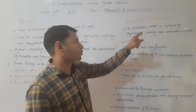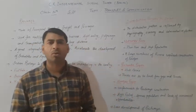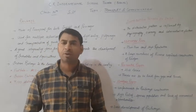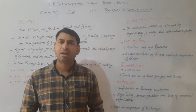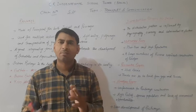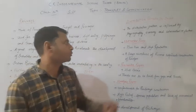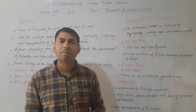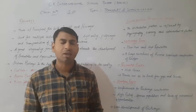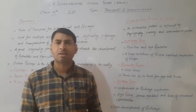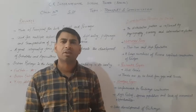The distribution pattern is influenced by physiography, economy, and administrative factors in railway development. Physiography means what kind of relief features are found — whether plains, mountains, or physical barriers. If we have plains, railways can be laid down very easily. We also need to find economical zones where industries and business hubs are located. Administrative factors are also responsible for effective development of railways.